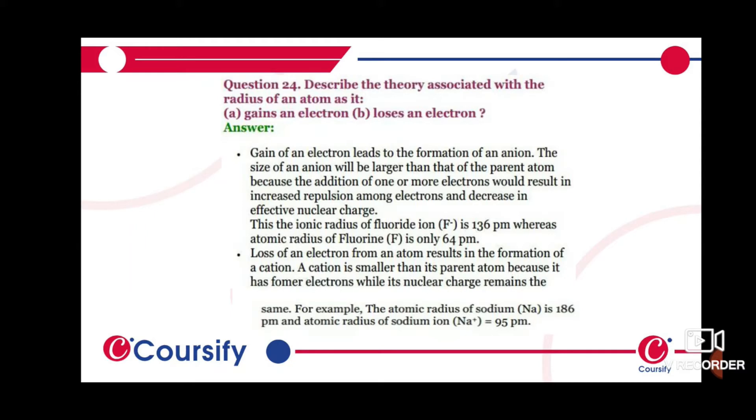This decrease in effective nuclear charge means the ionic radius of fluoride ion (F⁻) is 136 picometer, whereas the atomic radius of fluorine (F) is only 64 picometer. Loss of an electron from an atom results in the formation of a cation.